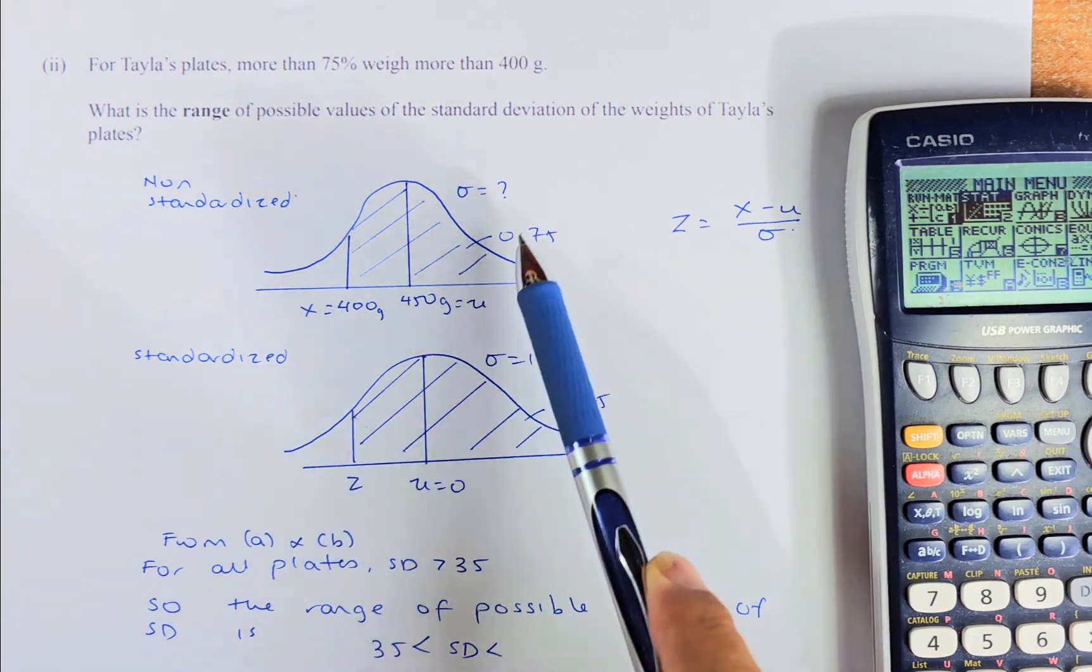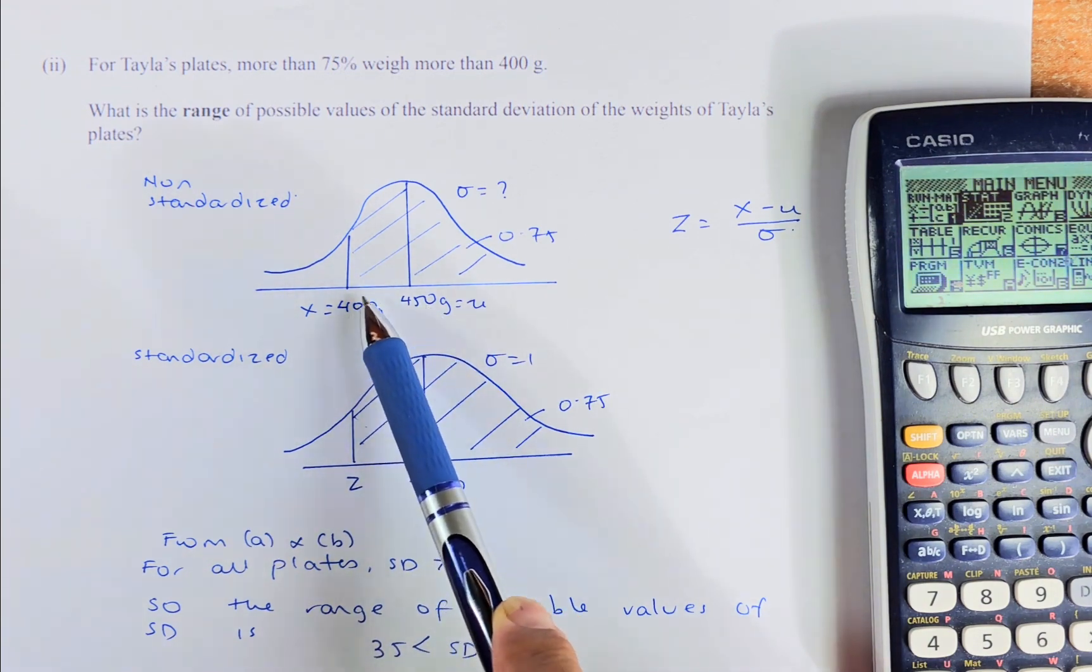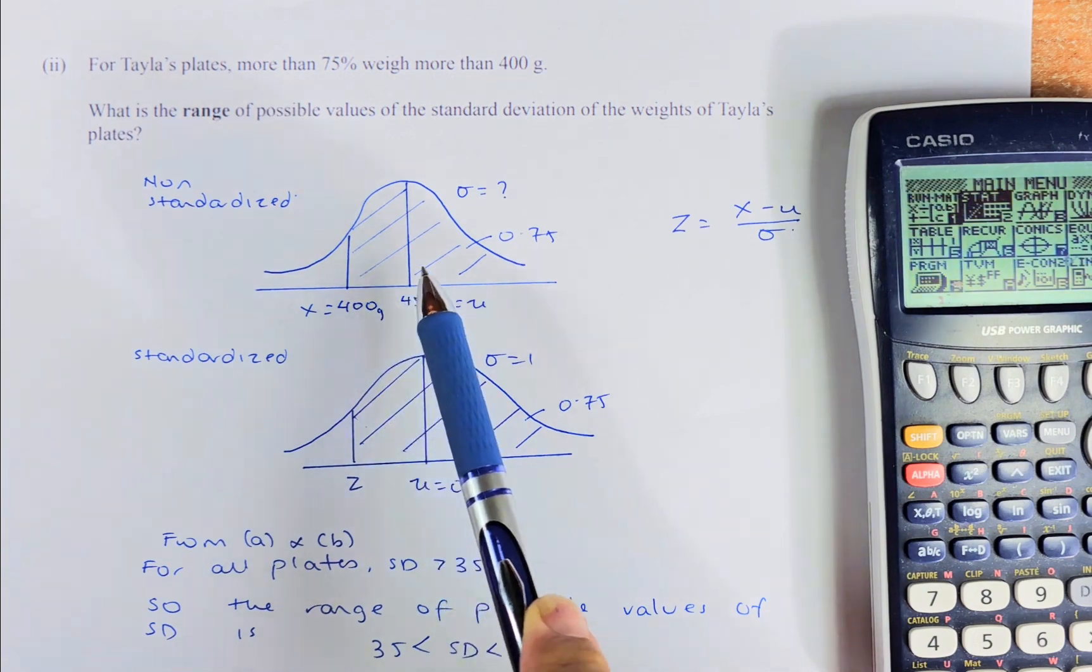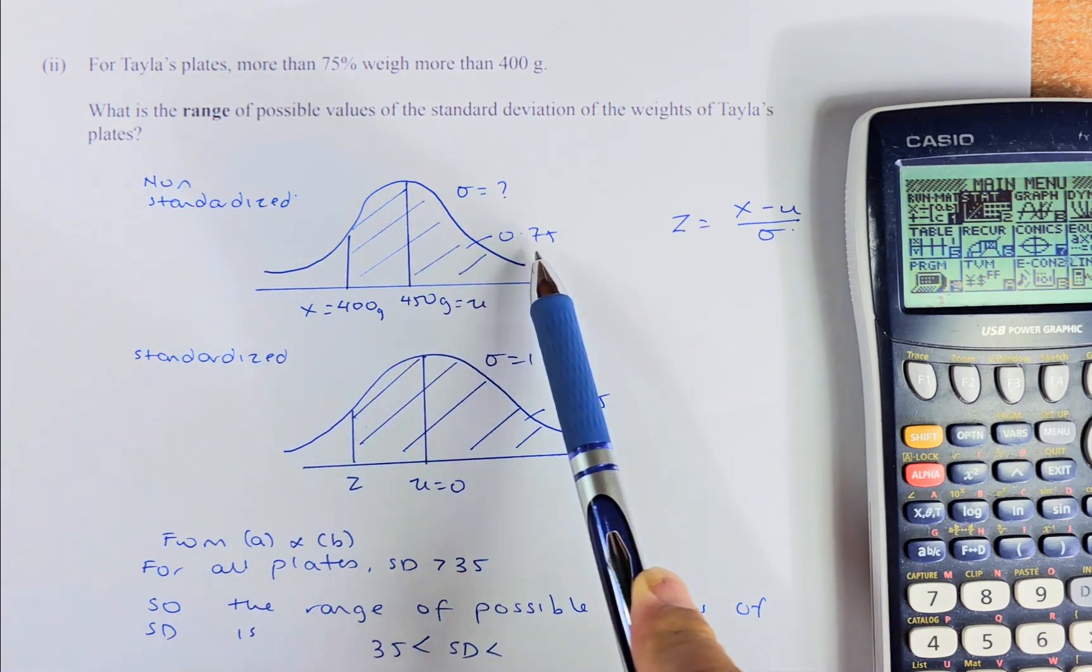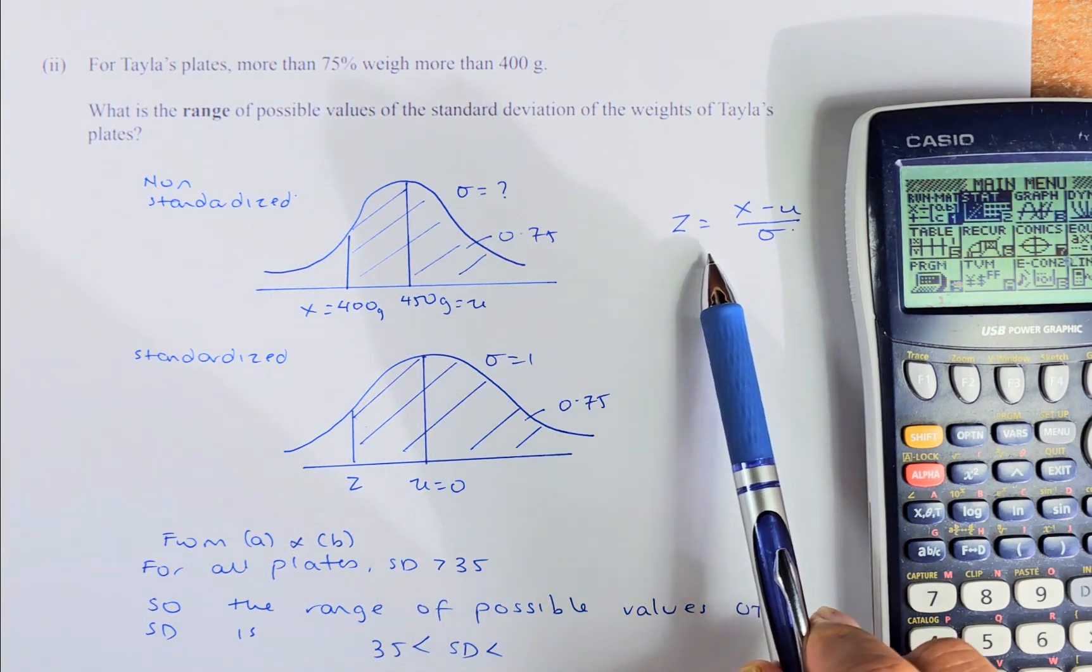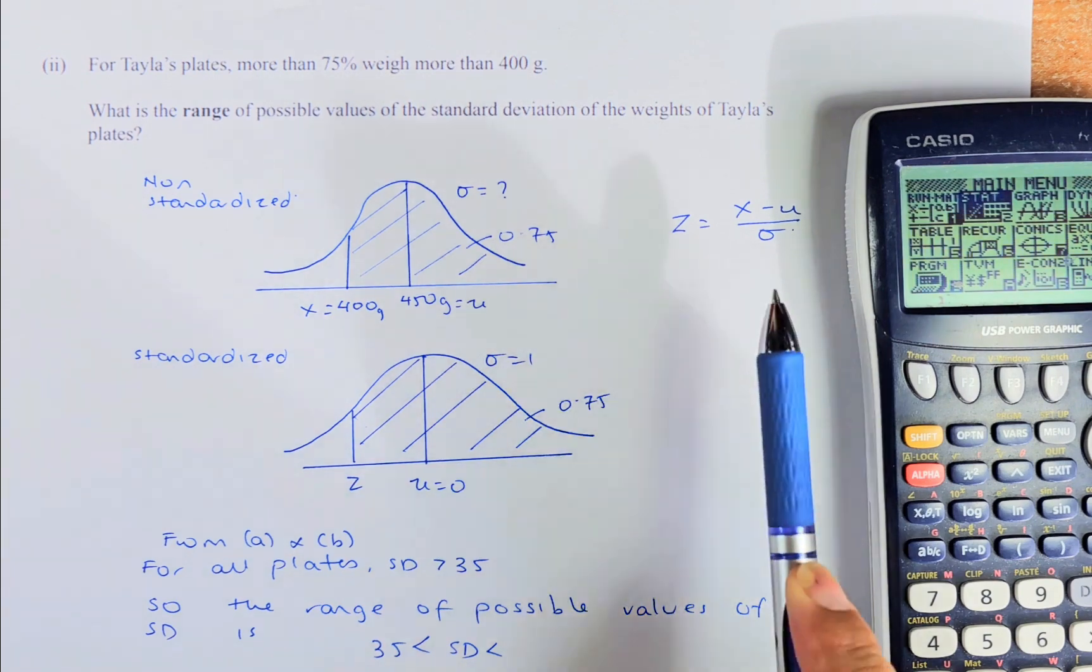We need to calculate the standard deviation of Taylor's plates. To do that, this is the non-standardized. So 450, 400. The mean is 450. The more than 75% is 400. So that's the X value. And you know the area here is 0.75. We need to find the Z value from the non-standardized. We need to use a graphic calculator to calculate the Z value. And then from the Z value, we're going to put in the formula and we are going to calculate the value of the standard deviation with the sigma.